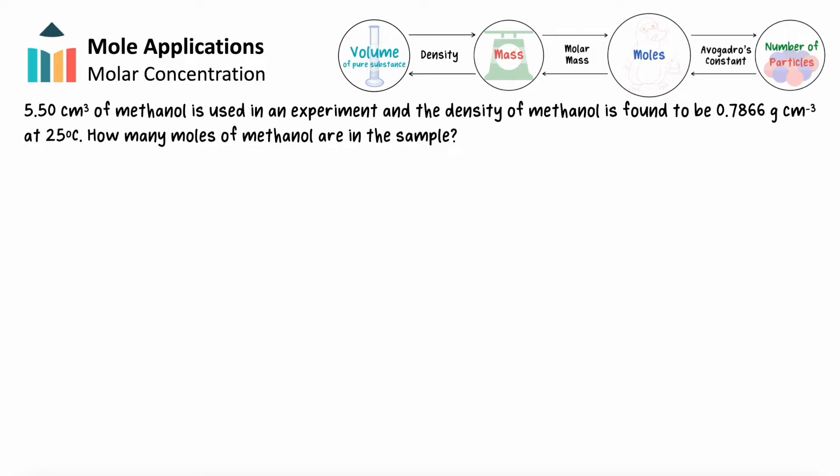For example, if a 5.50 cm3 sample of methanol is used in an experiment, and the density of methanol is found to be 0.7866 g per cm3 at 25 degrees Celsius, how many moles of methanol were used? Since we're converting from the volume of a pure liquid into moles, we'll first convert from volume into mass using density, then into moles using the substance's molar mass.